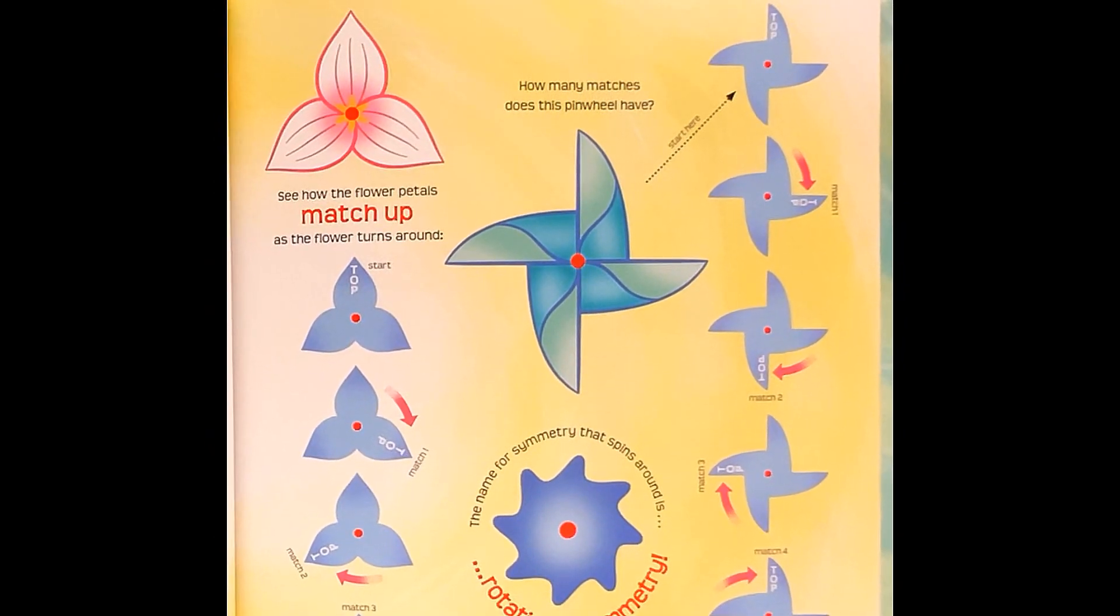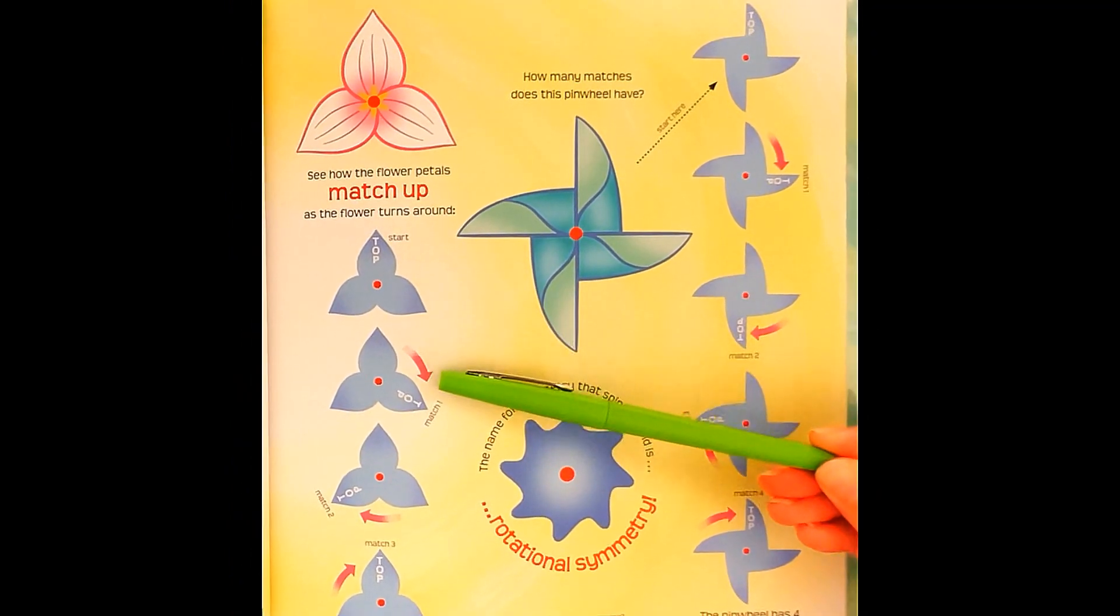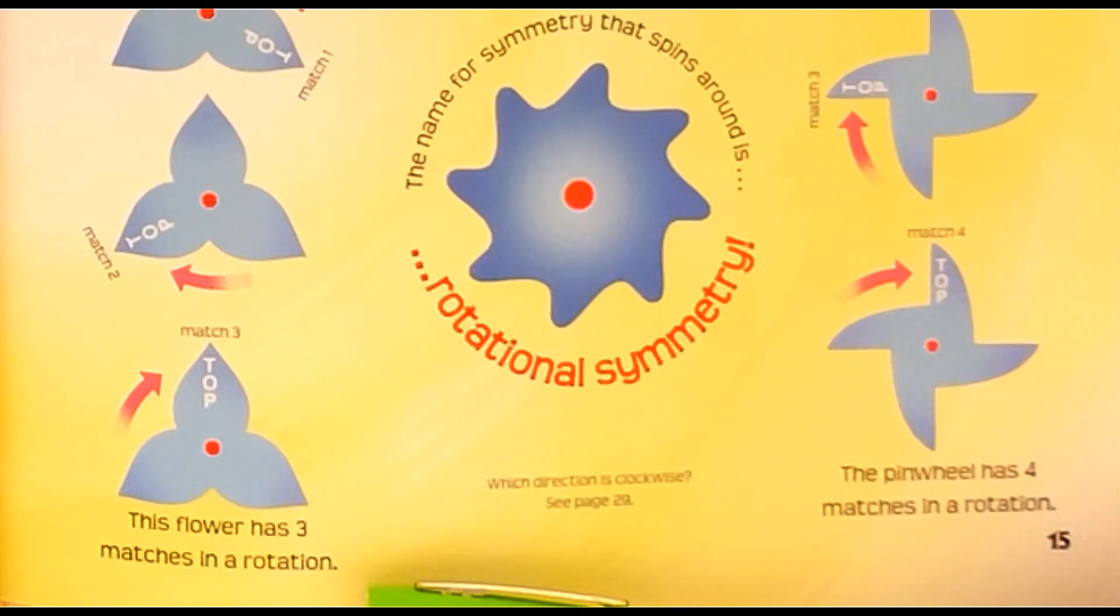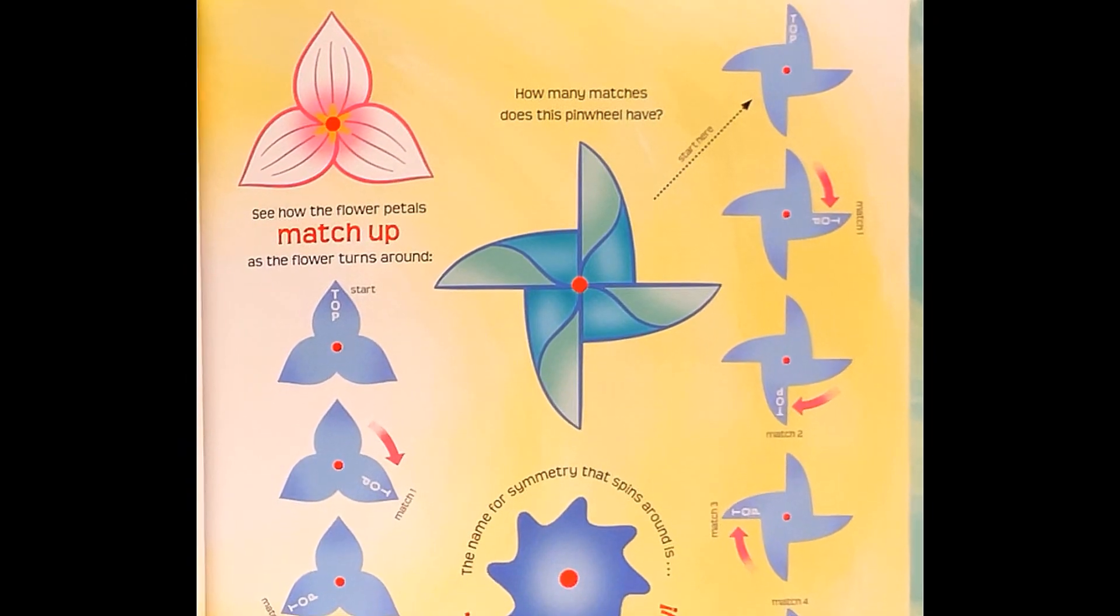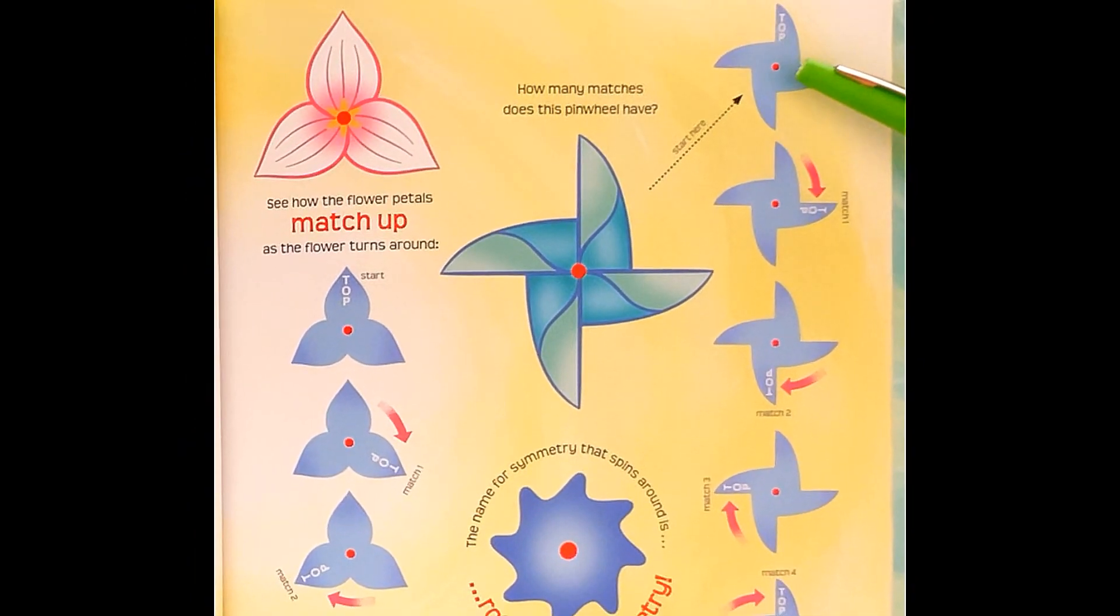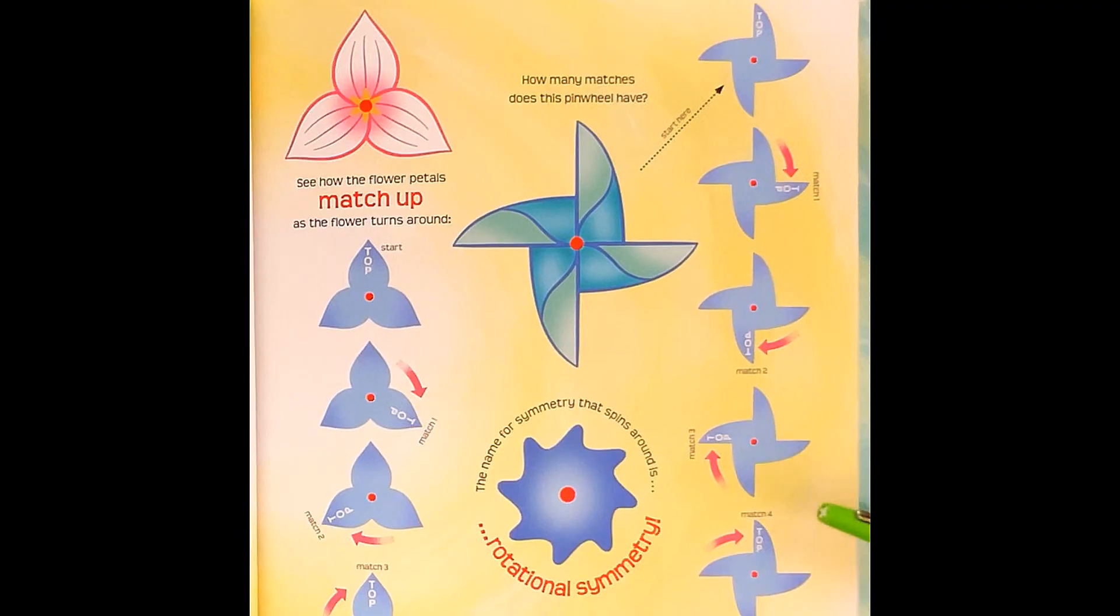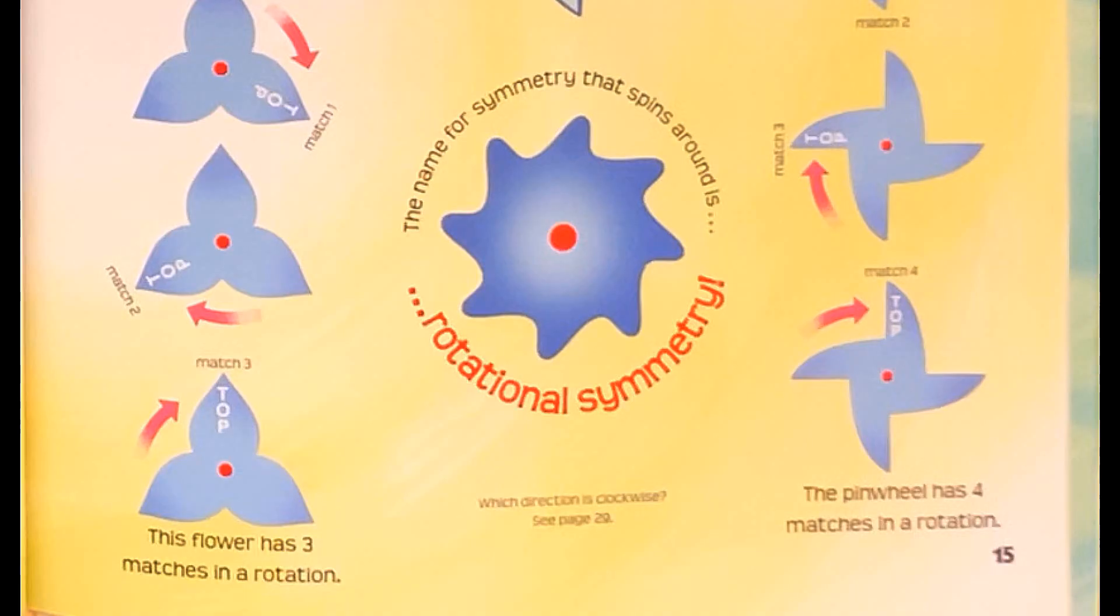See how the flower petals match up as the flower turns around? Start, match, match two, match three. This flower has three matches in a rotation. How many matches does this pinwheel have? Top, match one, match two, match three, match four. This pinwheel has four matches in a rotation. The name for symmetry that spins around is rotational symmetry. Which direction is clockwise? See page 29.